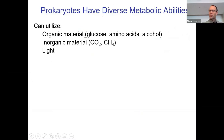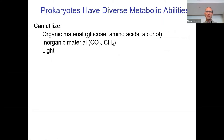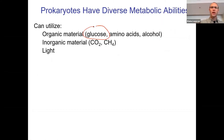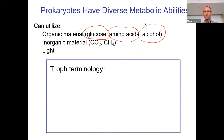What else can we say about bacteria? You could teach a whole class on them — people have entire degrees in bacteriology. But we're going to keep this minimal. One thing is that bacteria have a huge amount of metabolic diversity, meaning they can eat all sorts of weird things. Some of them eat organic material like glucose, amino acids, or alcohols. Others utilize inorganic molecules, and some are photosynthetic like plants.